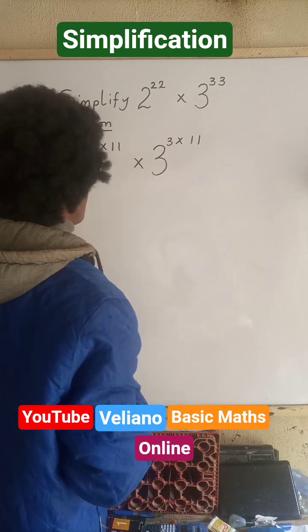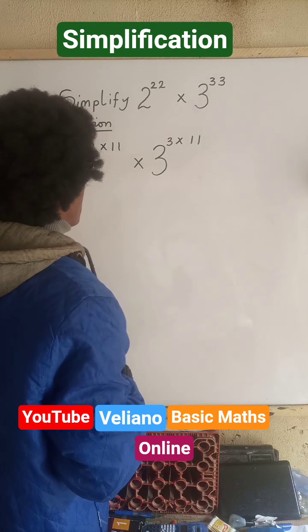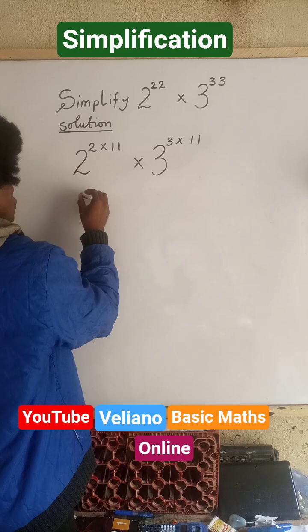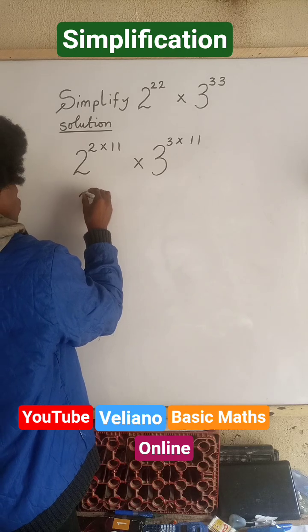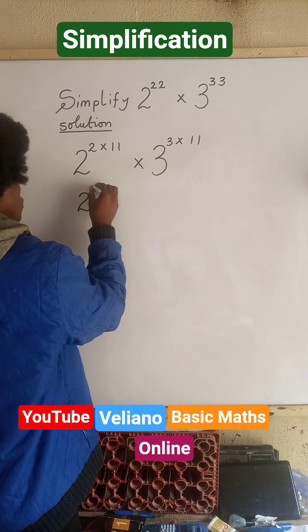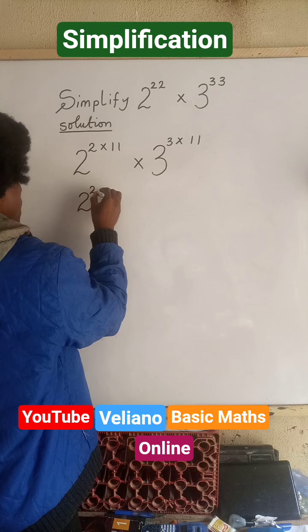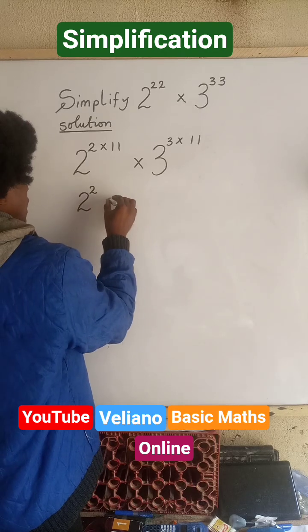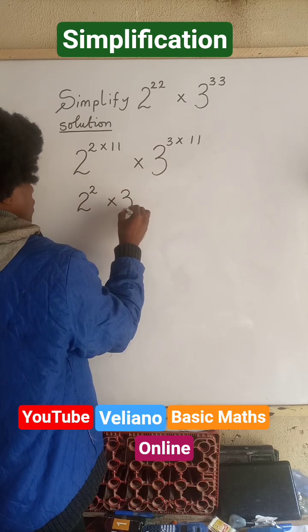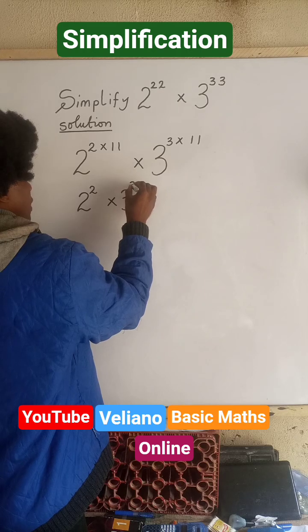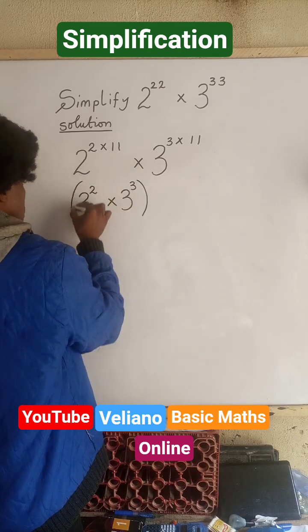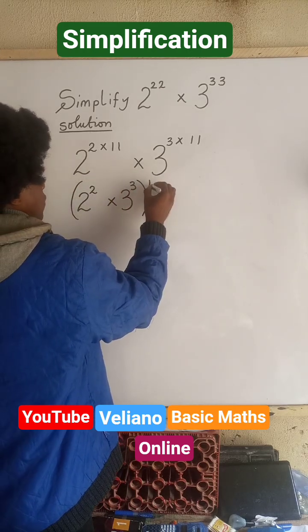For the exponent, I will take what they have in common, which is 2 power 2 multiplied by 3 power 3. All in brackets, power 11.